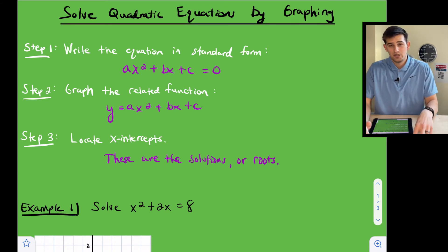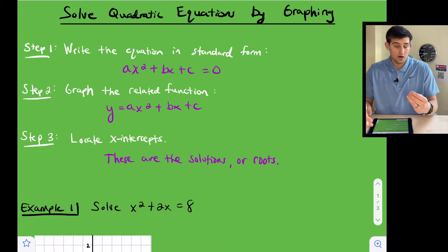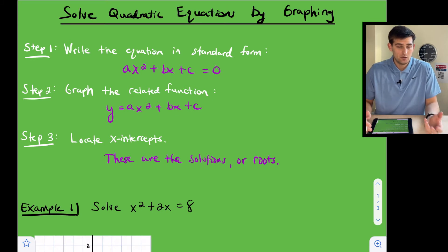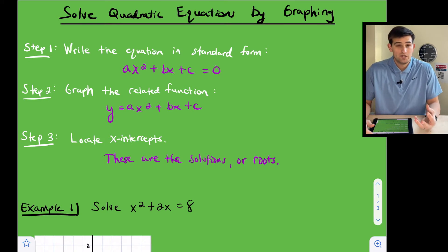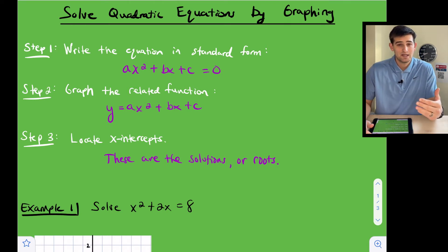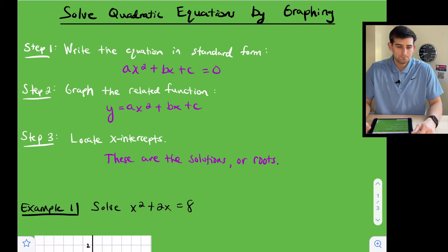Our parabola could cross the x-axis two times — we locate the x-intercepts, which are the solutions or roots of the quadratic, giving us two real solutions. It could only touch the x-axis once, maybe the vertex is on the x-axis, giving one real solution. Or the parabola could never touch the x-axis, meaning there are no real solutions. We're going to see an example of each of those three solution types.